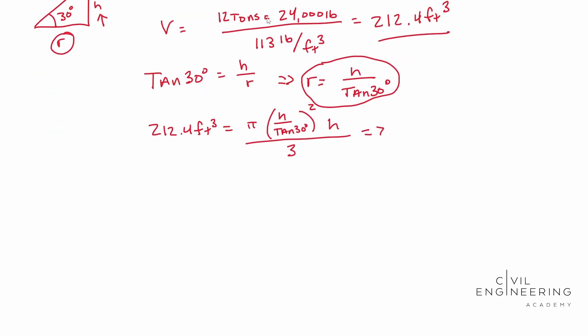So with that said, we need to actually simplify this down a little bit. If you move some things around, three times 212.4 cubic feet over pi is equal to H, H over the tangent 30, squared times H.